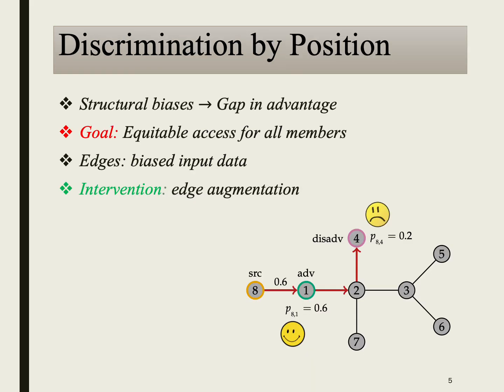Social network formation often introduces biases in their structure that create disadvantages for individuals who lack access due to factors like demographic or socioeconomic status. This results in better-positioned individuals enjoying more privileges, while the network structure reinforces existing advantages and widens the gap further. By considering the edges as biased input data, we intervene through edge augmentations to promote fairness and ensure equitable outcomes for all members of the network.